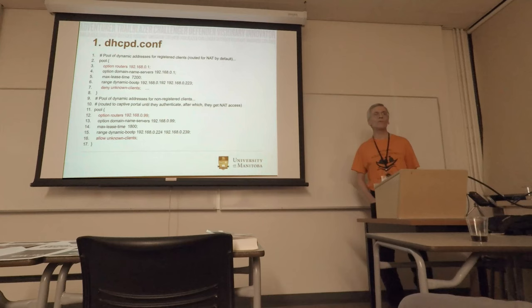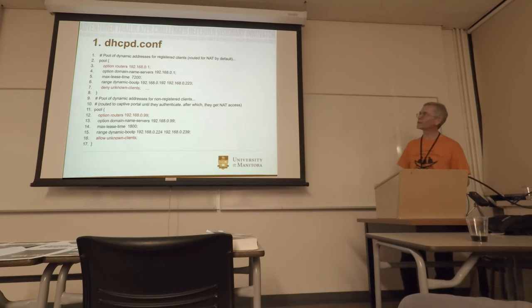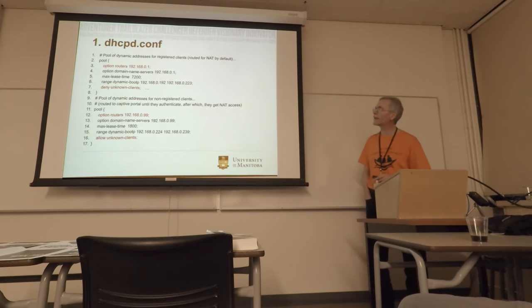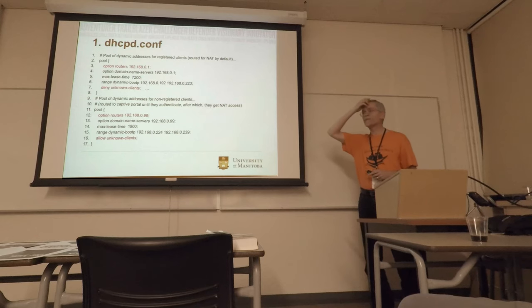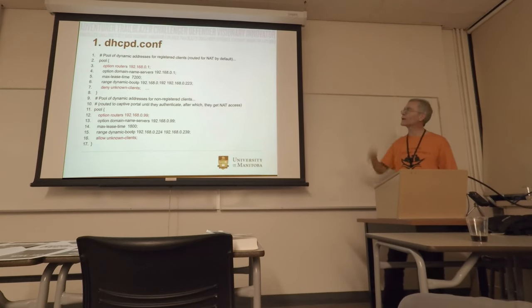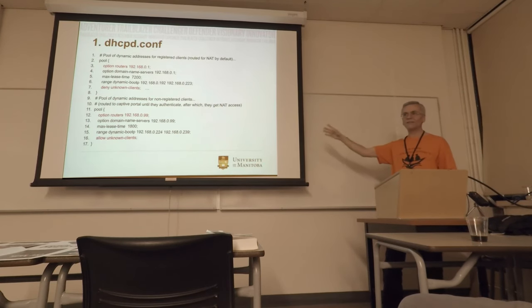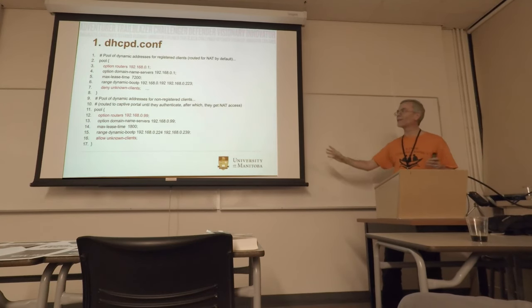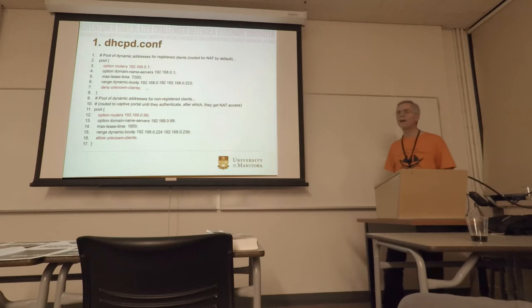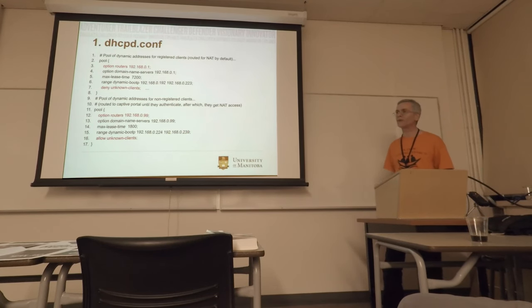The first thing is DHCP — this is what the configuration would look like, a rough skeleton, with ISC DHCP. Each of those components could be a separate full presentation on its own. This is just a very quick overview of the directives that are particular to what I'm trying to accomplish.